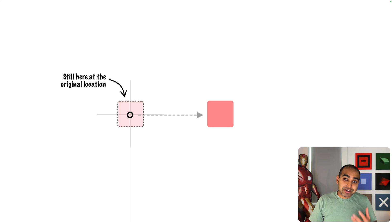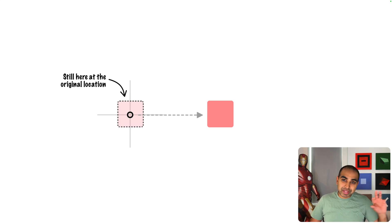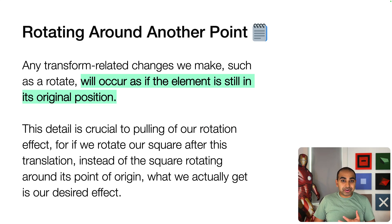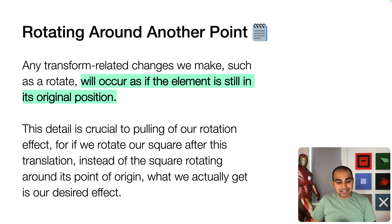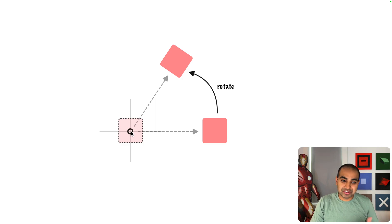Here's the key thing to keep in mind about transforms: a transform does not physically move the element or adjust its core characteristics — it's a modification, a copy in many ways. So even when we do a translate, the transform origin doesn't shift along with the new translated position. It's still where the element's original center was. Any transform-related change, such as a rotation, will occur as if the element is still in its original position. This detail is crucial.